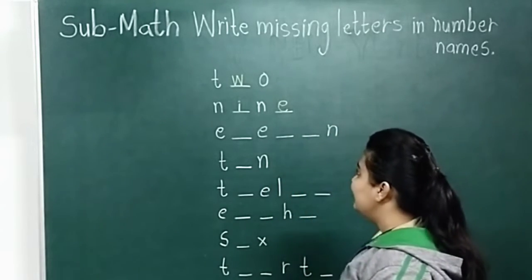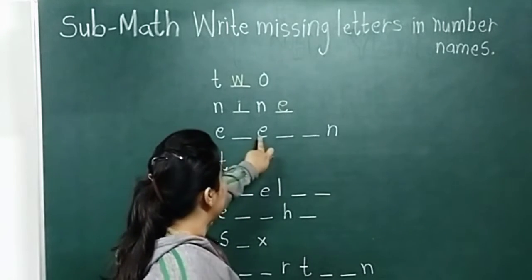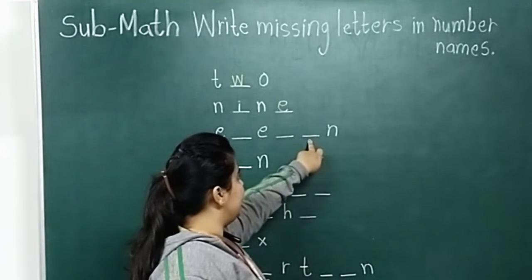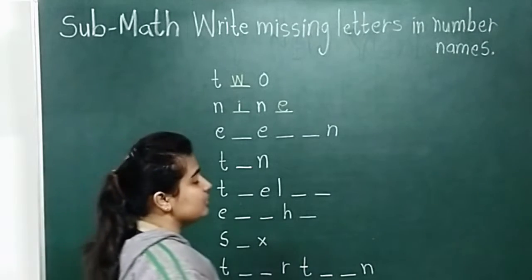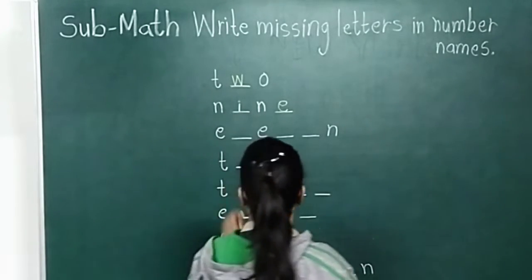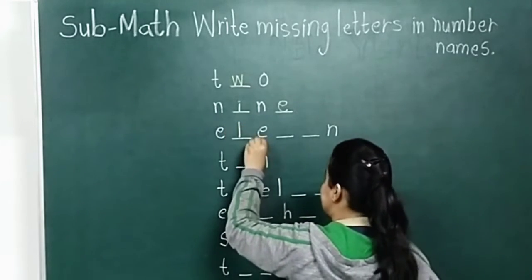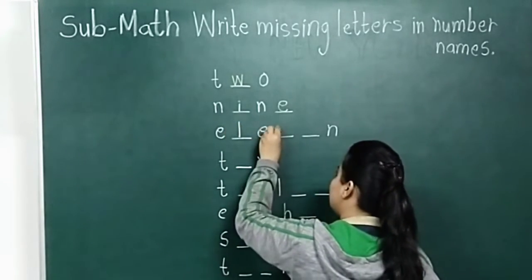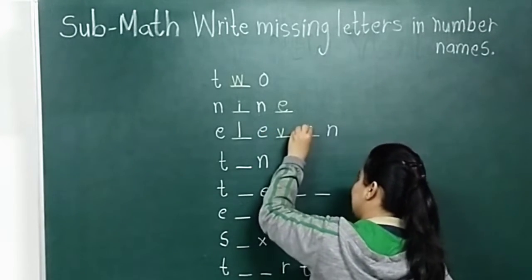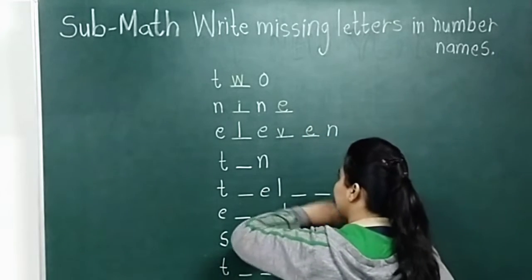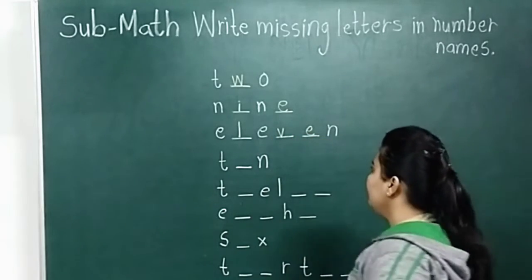Now next number name. E, dash, E, dash, E, N. Which number name is this? Eleven. E is written, we write L, E is written, we write V, then E, and N is written. E, L, E, V, E, N — eleven.